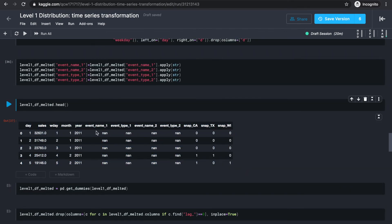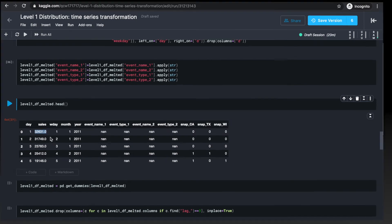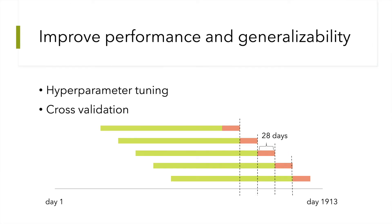Now each row describes a series on a certain day, and the label is just the sales number. Once we're done reformatting the data and creating these informative features describing each data point, we can get into the model building process.